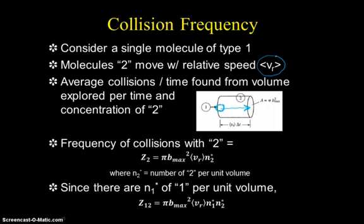We want to know how often this molecule of type 1 is going to collide with molecules of type 2 per unit of time. To do that, we consider that this molecule is going to sweep out a cylinder whose radius is given by b_max. The area of that cylinder is π times b_max squared. The length traversed over time interval ΔT is the average relative velocity times ΔT. That gives us the size of the cylinder.